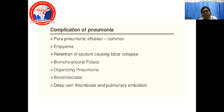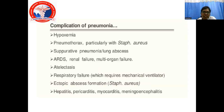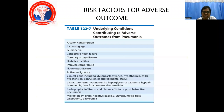Complications of pneumonia include parapneumonic effusion — most common — empyema, retention of sputum causing lobar collapse, bronchopleural fistula, organizing pneumonia, bronchiectasis, deep vein thrombosis, and pulmonary embolism. Hypoxemia, pneumothorax — particularly if the causative organism is Staphylococcus aureus, which can lead to pneumatocele formation that may rupture into the pleural space causing pneumothorax — septic pneumonia and lung abscess. ARDS, renal failure, multi-organ failure, atelectasis, respiratory failure requiring mechanical ventilation, ectopic abscess formation — more common with Staphylococcus — hepatitis, pericarditis, myocarditis, and meningitis. The infection can spread anywhere in the body leading to all these complications.